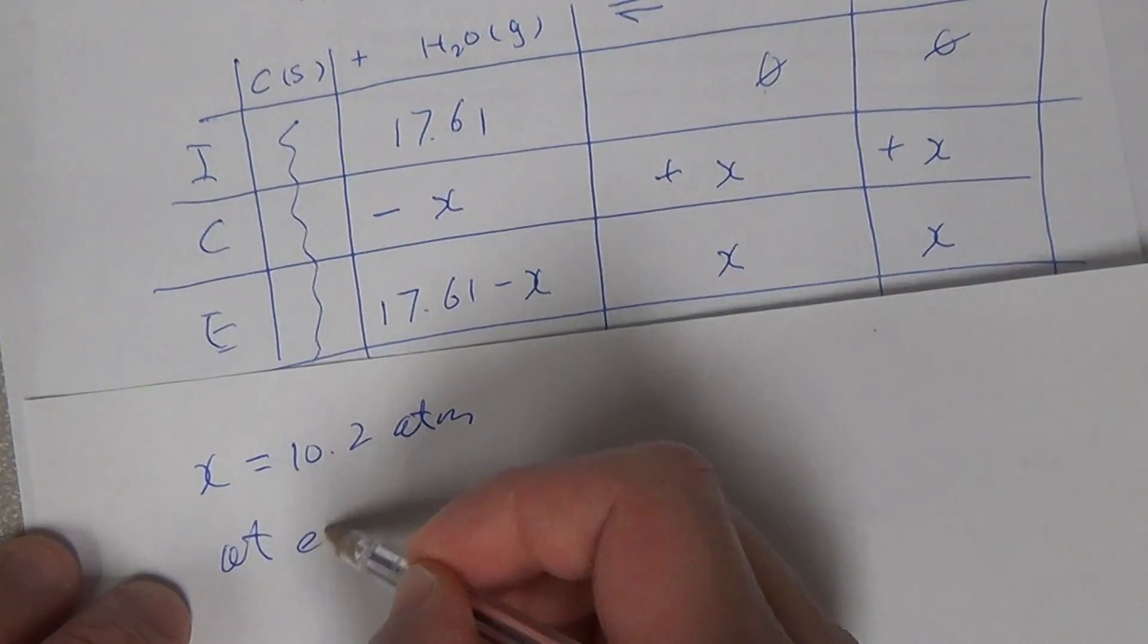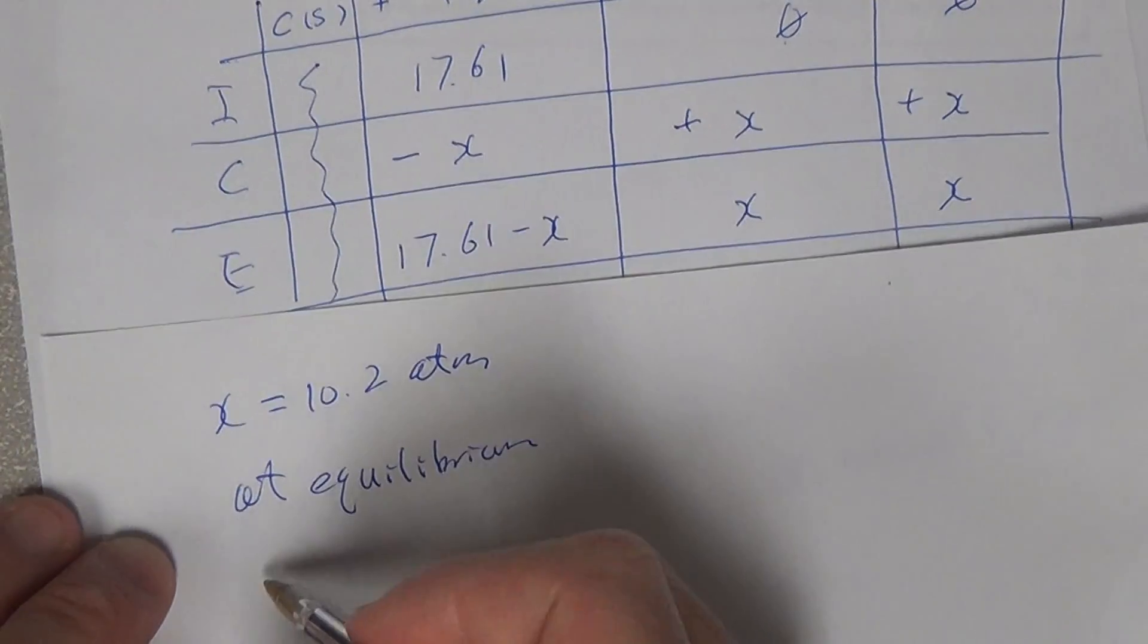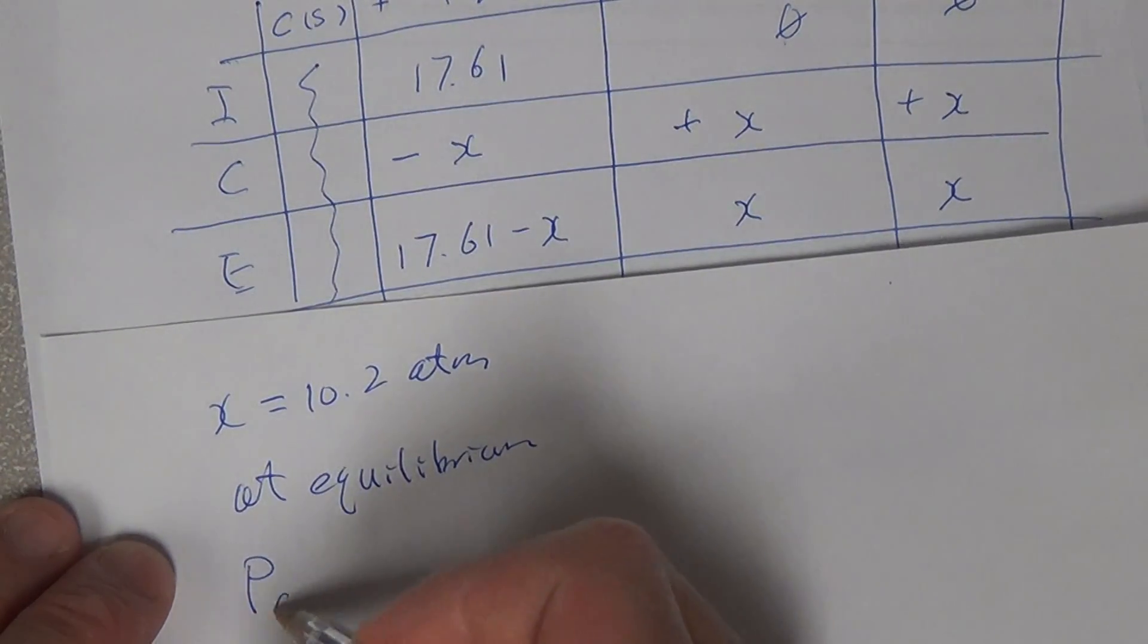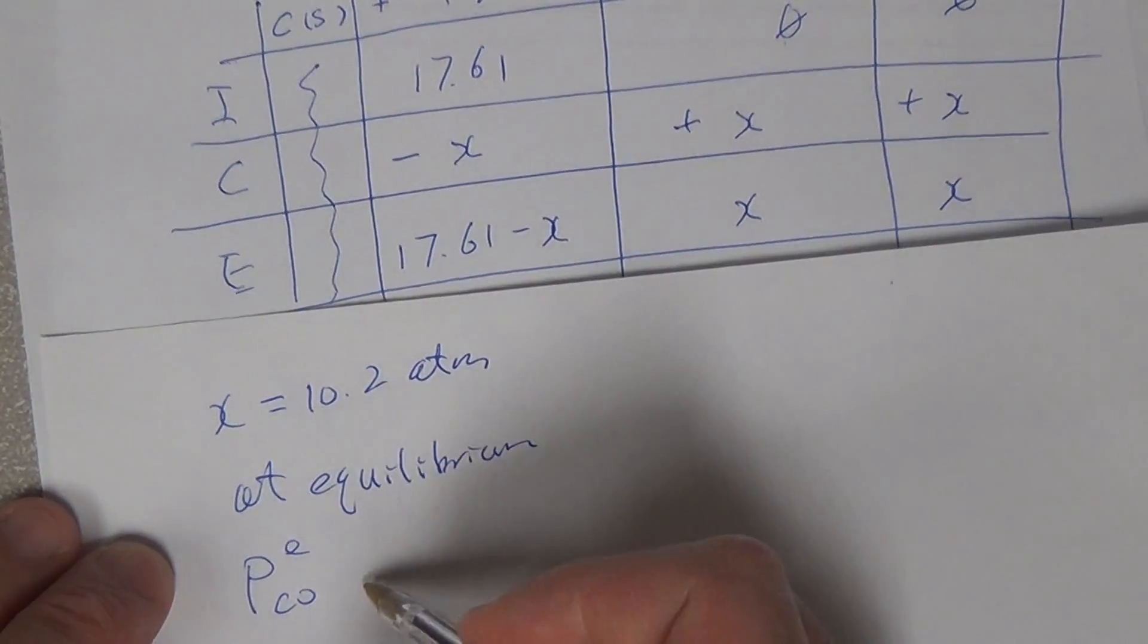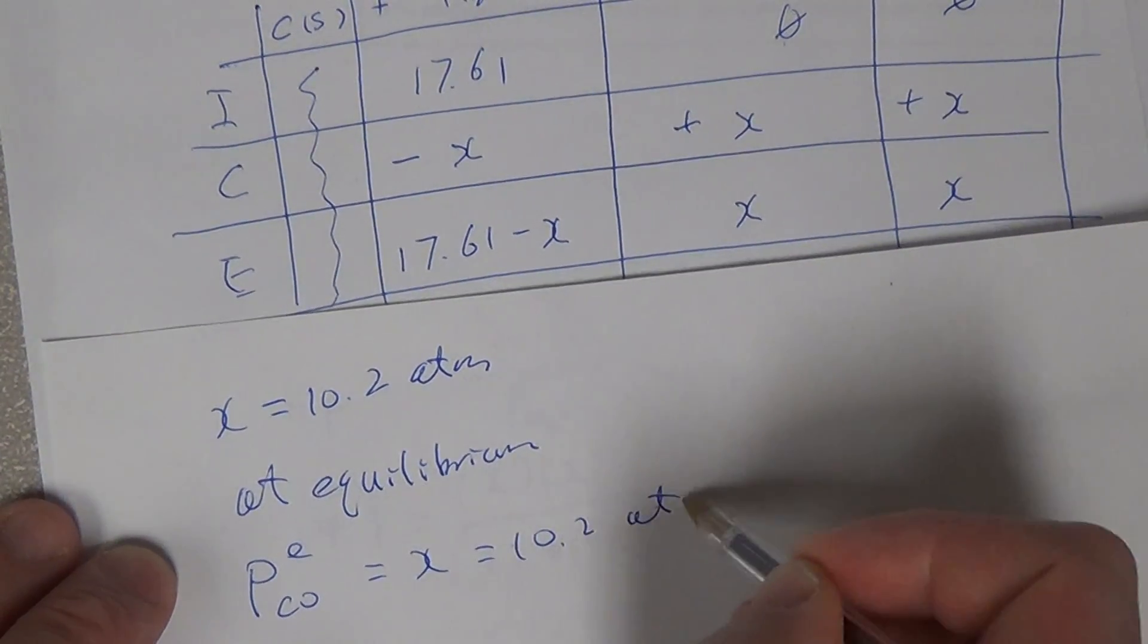So therefore, at equilibrium, the partial pressure of CO, I call that E, equals x equals 10.2 atm.